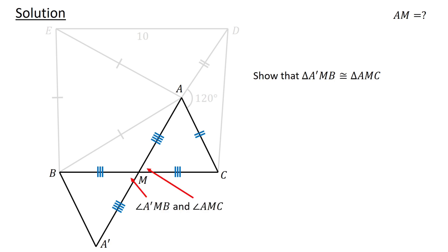First, consider angles A'MB and AMC, which are vertically opposite angles. Recall that vertically opposite angles are equal. Thus, angle A'MB equals angle AMC. Since MB equals MC, A'M equals AM, and the included angles are equal.